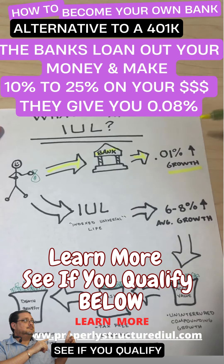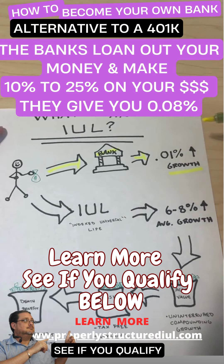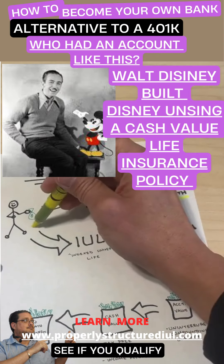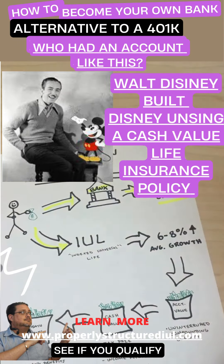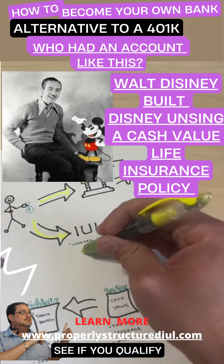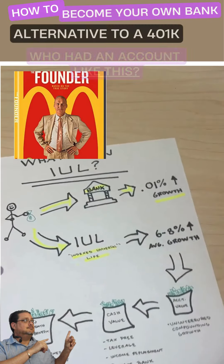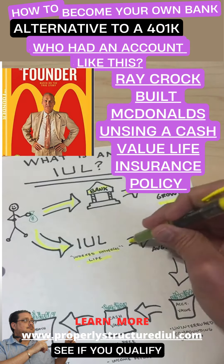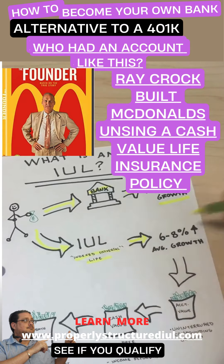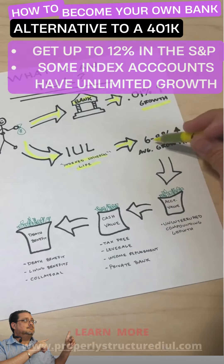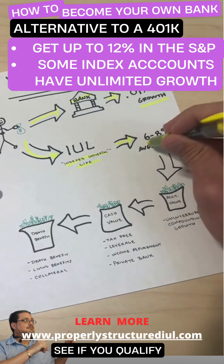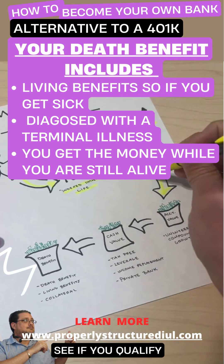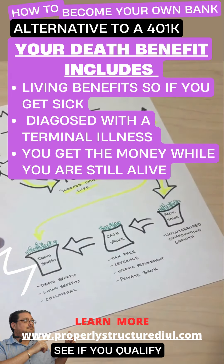The bank is going to loan your money out and make all the money. Alternatively, what you should do is take your money and put it in an IUL — also known as an Indexed Universal Life insurance policy. Your money is protected, it has guaranteed growth, and it never loses. You'll see an average rate of return of about 6 to 8 percent.